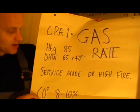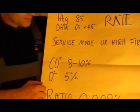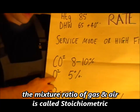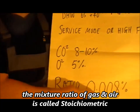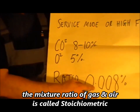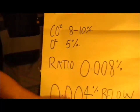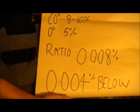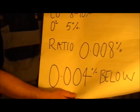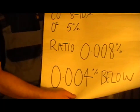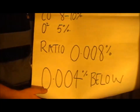We're looking at carbon dioxide of 8 to 10 percent, oxygen at 5 percent, and a ratio of 0.008 — it has to be below that legally. What is good is to be below 0.004; that is very good. Display that. If it's between these figures, the appliance really needs to be stripped down and serviced.